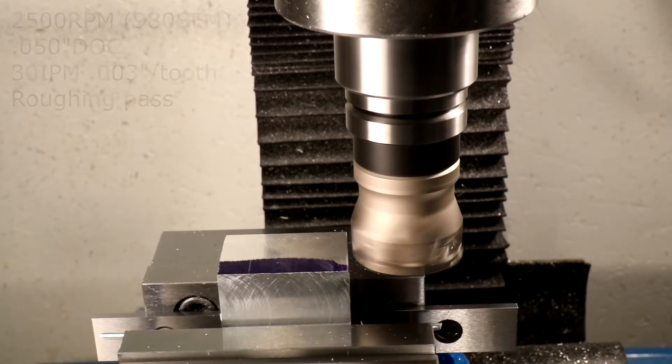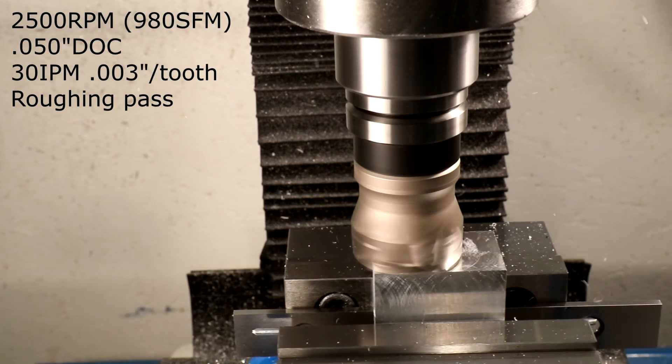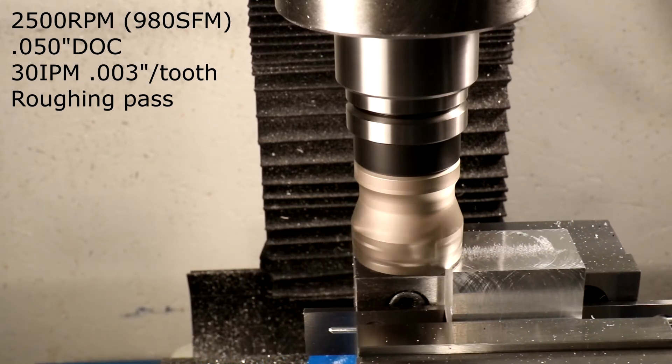To further test the face mill, we can take a bit more material off. This required approximately 750 watts and thus the limit of the one horsepower spindle.